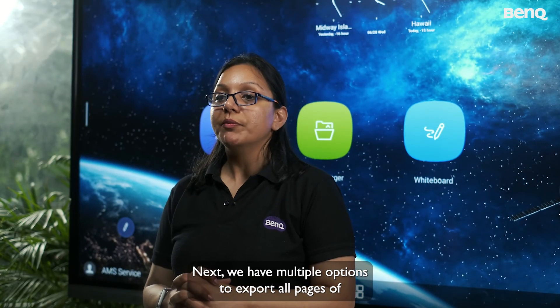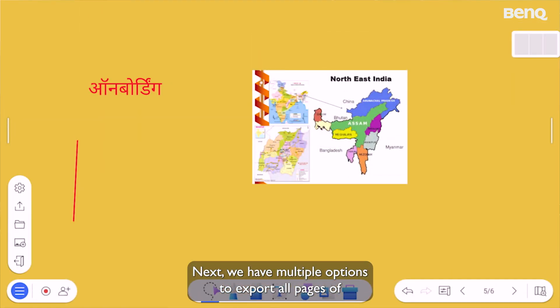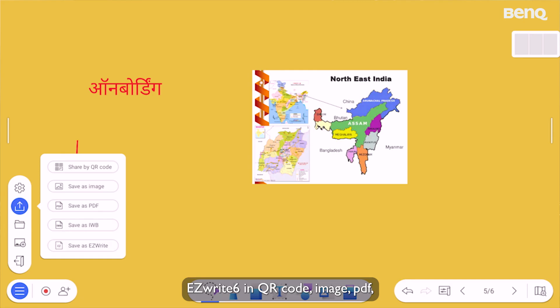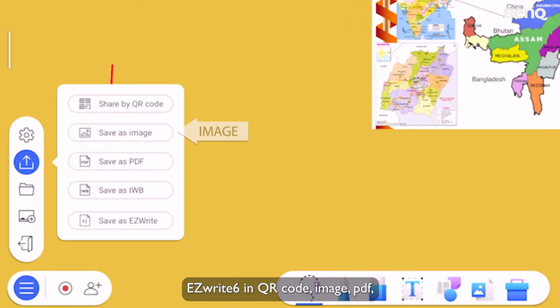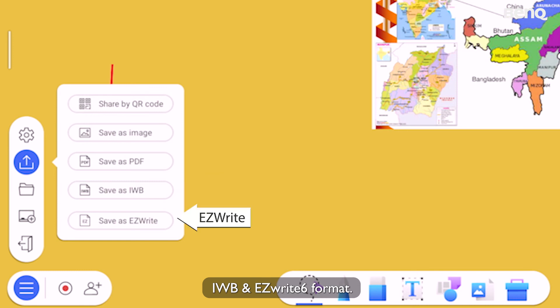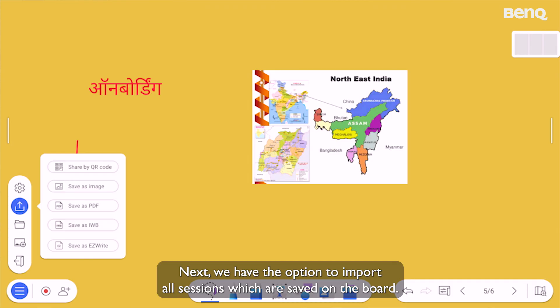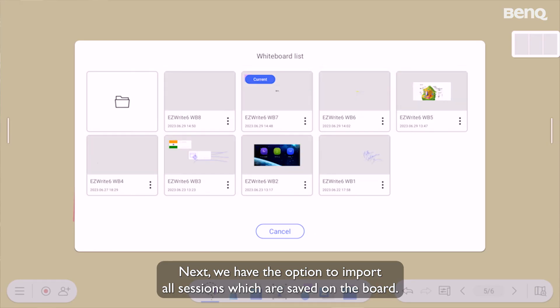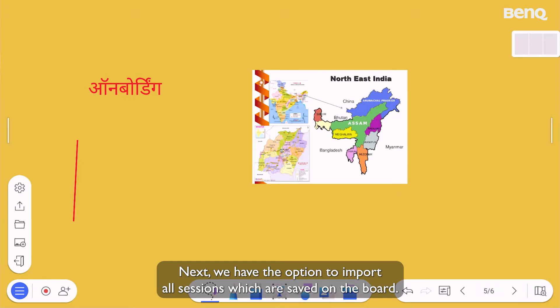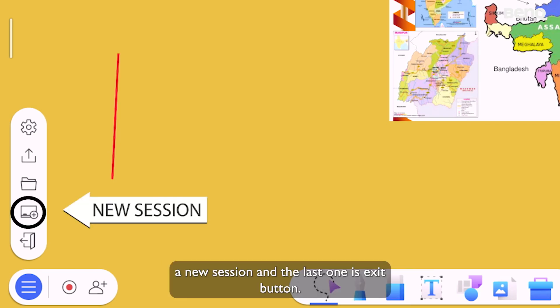Next, we have multiple options to export all pages of EZWrite 6 in QR code, image, PDF, IWP and EZWrite 6 format. Next, we have the option to import old sessions, which are saved on the board. We can start a new session and the last one is exit button.